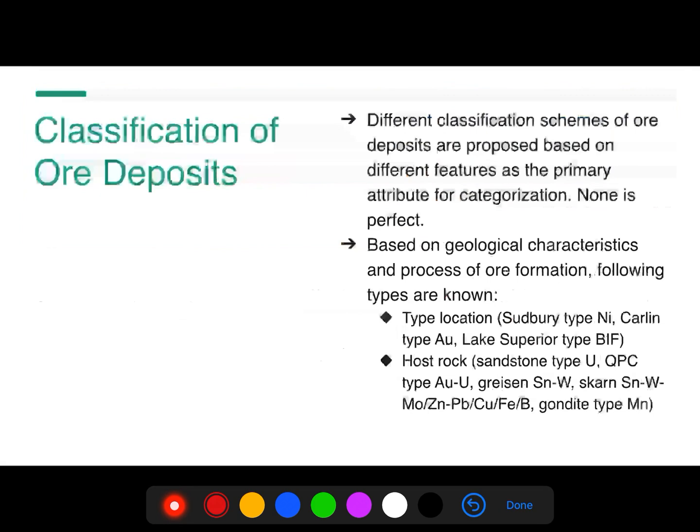The first scheme is based on type location — examples include the Sudbury-type nickel deposit, Carlin-type gold deposit, and Lake Superior-type banded iron formation deposit. These deposits are typical to that particular location and hence have been named after the type locations. Next, we have classification by host rock — for example, sandstone-type uranium deposit, quartz-pebble conglomerate-type gold-uranium deposit, greisen tin-tungsten, skarn, and gondite-type manganese deposits.